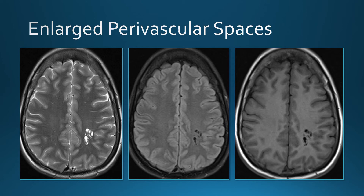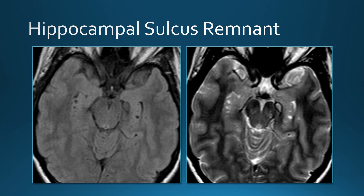Another patient with enlarged perivascular spaces in the subcortical regions. This patient has CSF-intensity areas within the hippocampi — these are remnants of the hippocampal sulcus, formed during the infolding of the hippocampi and considered a normal variant.